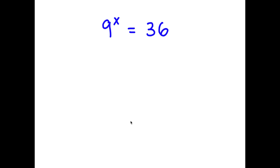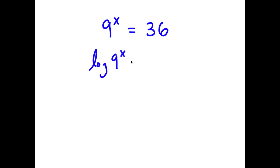In this problem, I have 9 to the power of x is equal to 36. To solve this, I'm going to first start by taking the log on both sides. So now I have log of 9 to the power of x is equal to log of 36.